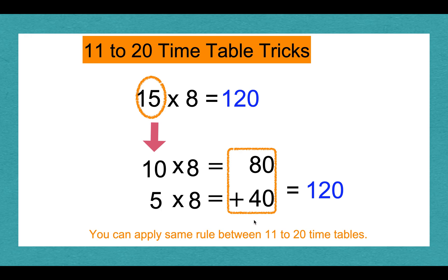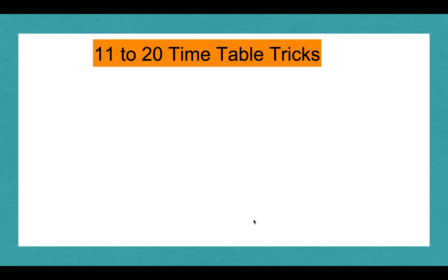You can apply the same rule between 11 to 20 timetables. Next, we're going to do 12 times 6.